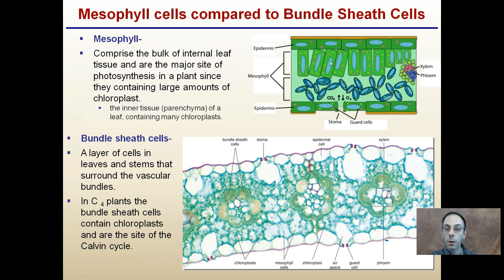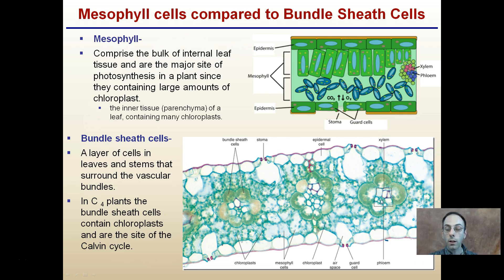The inner tissue parenchyma of a leaf containing many chloroplasts is located right here. Bundle sheath cells — a layer of cells in leaves and stems that surround vascular bundles, which are the xylem and phloem. In C4 plants, the bundle sheath cells contain chloroplasts and are the site of the Calvin cycle.